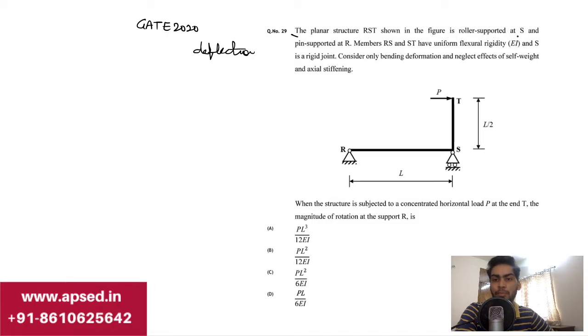It is roller supported at S and pin supported at R. Members RS and ST have uniform flexural rigidity, so the EI value is the same for both of these parts, and S is a rigid joint.